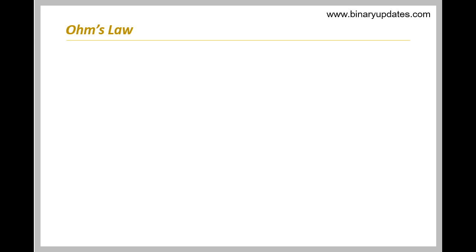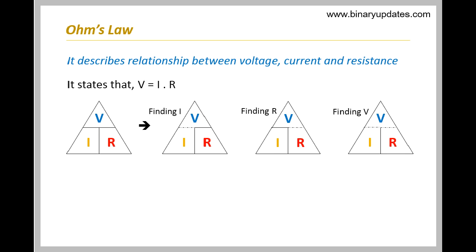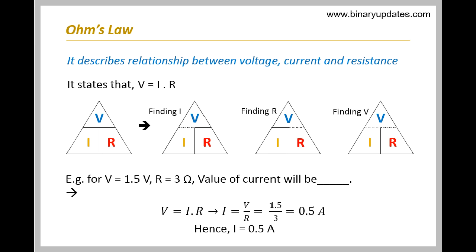Ohm's law describes the relationship between voltage, current, and resistance. The ohm's law equation can be remembered as V=IR. The example demonstrates the use of ohm's law to find out value of current.